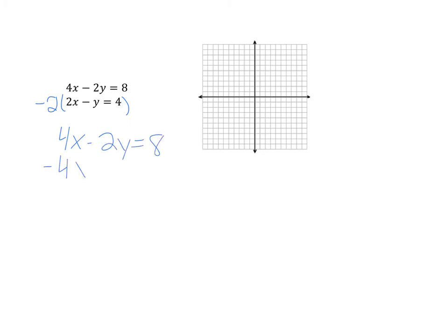And my second one becomes negative 4x plus 2y equals negative 8. When I solve this algebraically, I get 0 equals 0. This is true. When my variables cancel out and I get a true statement, that means that I have the same exact equation. Therefore, the graph would look like one line, and my system is consistent and dependent.